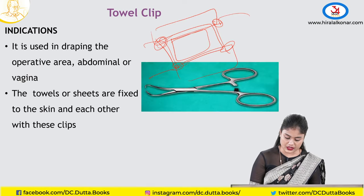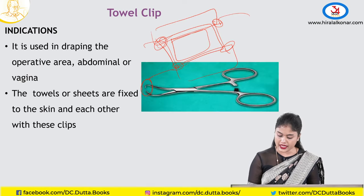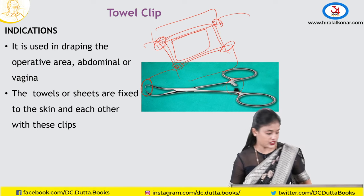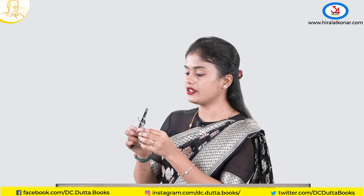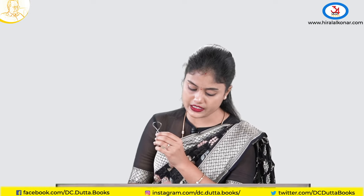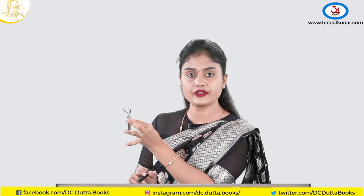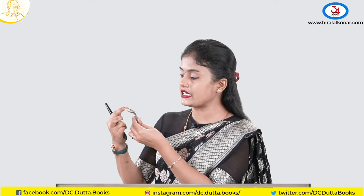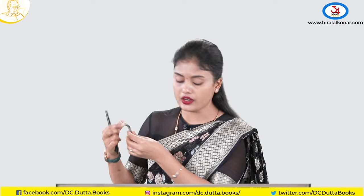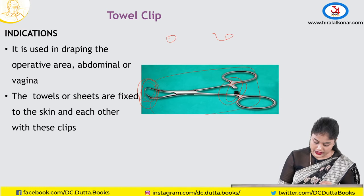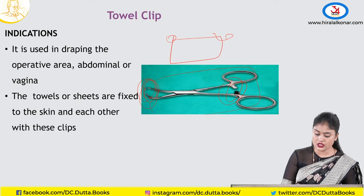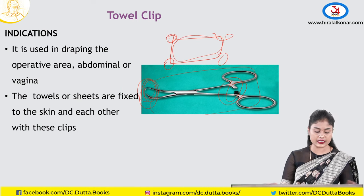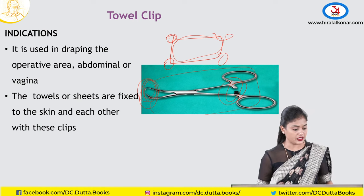The towel clip has a tooth tip and a lock — you just hold the drapes with it and lock. This is the lock and this is the tip of the instrument. We use it to drape the surgical site so that only the surgical site is visible and the rest of the area is covered with the green sheet.